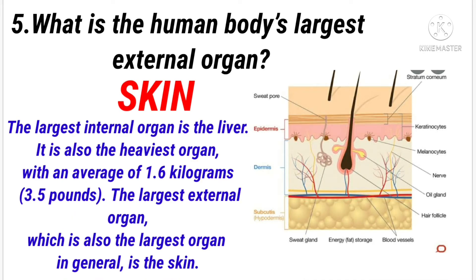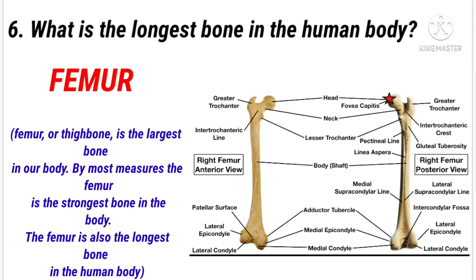What is the human body's largest external organ? Answer: Skin. What is the longest bone in the human body? Answer: Femur.